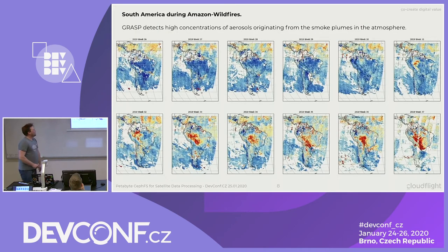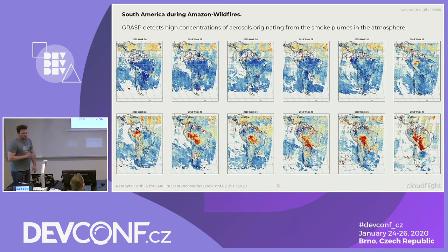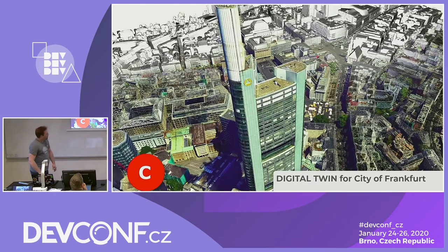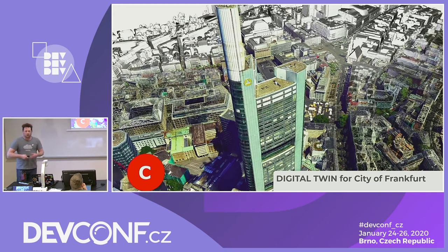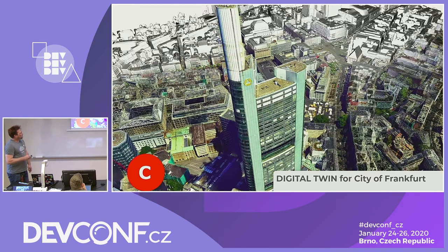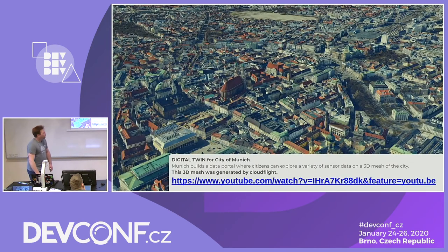Or here we have the smoke plumes in the atmosphere in South America during the fires in the Amazon. You can see quite clearly here there is a lot of dust and pollution. This is a digital twin city of Frankfurt — that's something generated out of photogrammetric data, where I said two overlapping pictures, and then you can create point clouds out of that. Here you can already recognize the generated point cloud — we did that for Frankfurt and even for Munich.